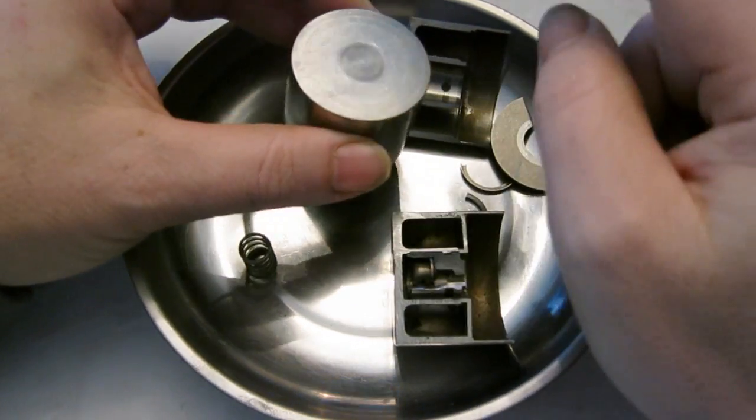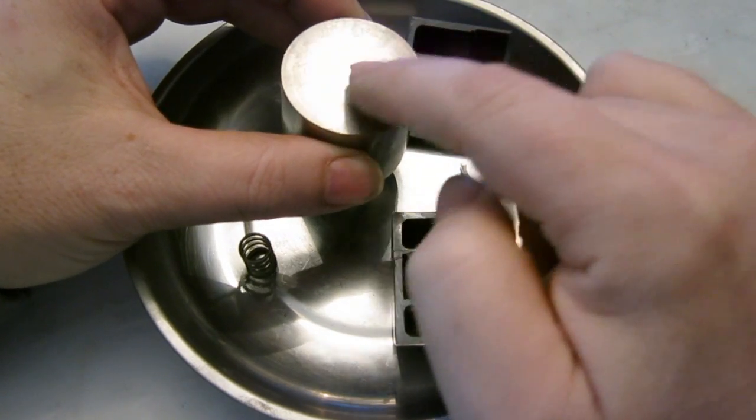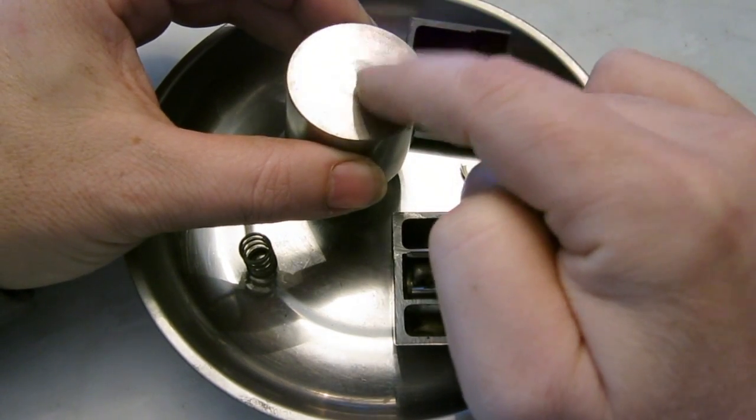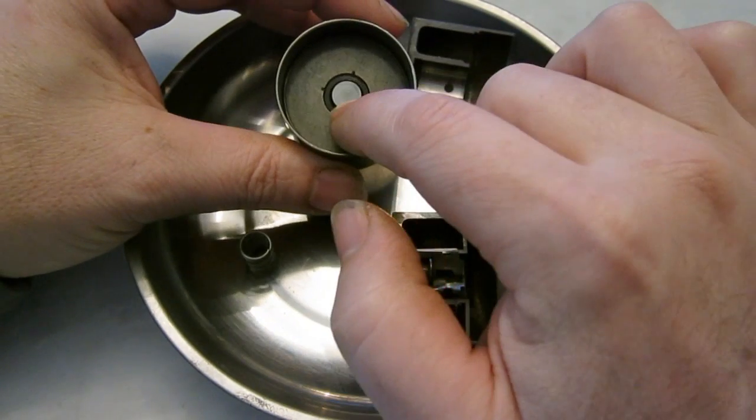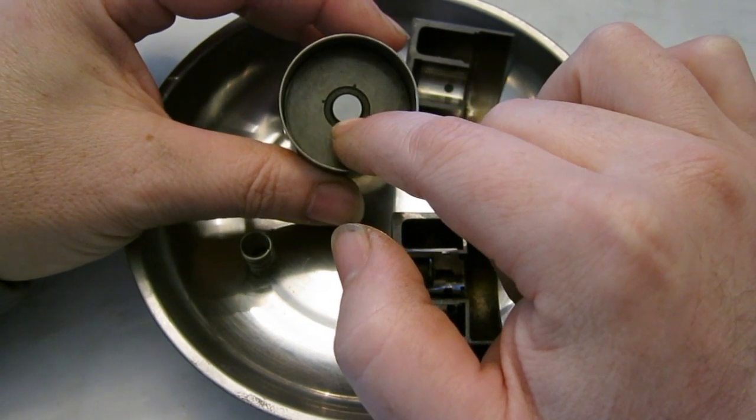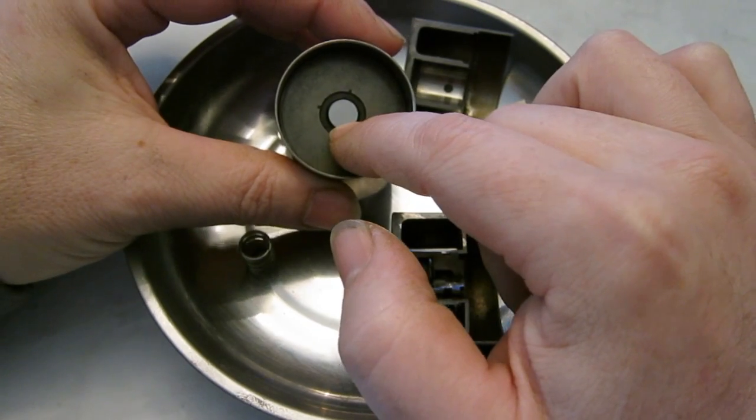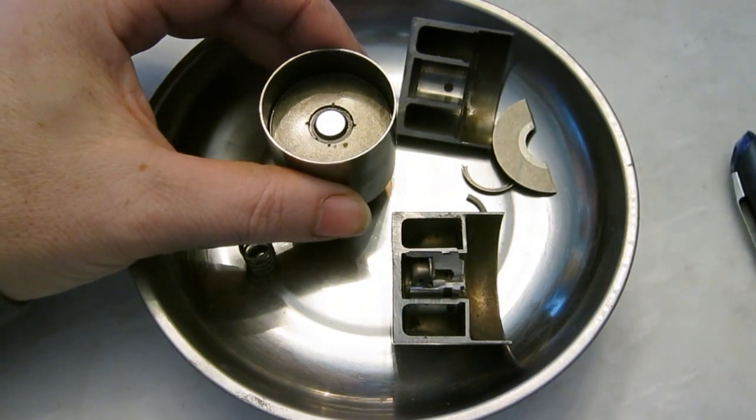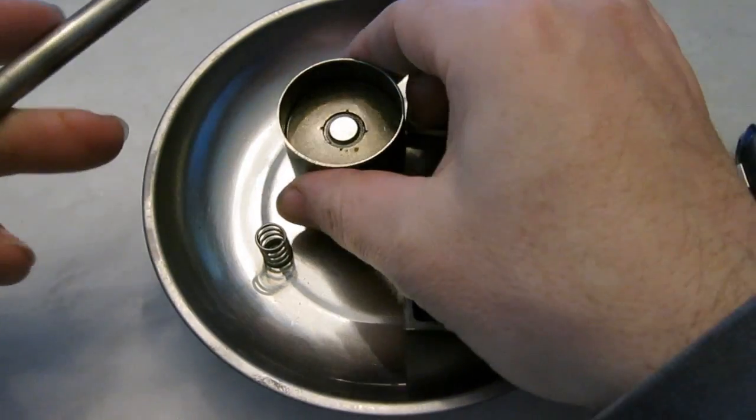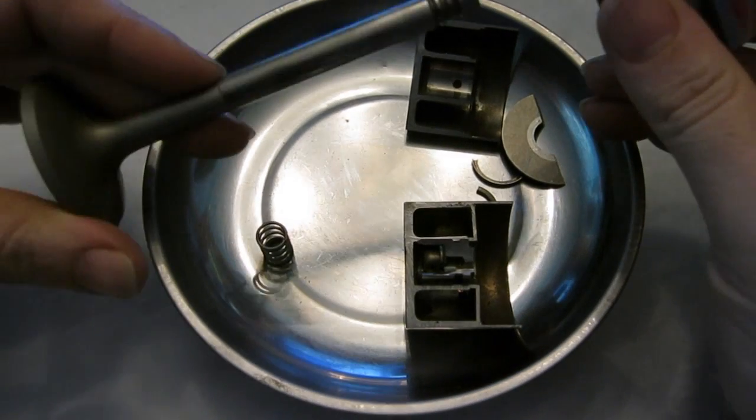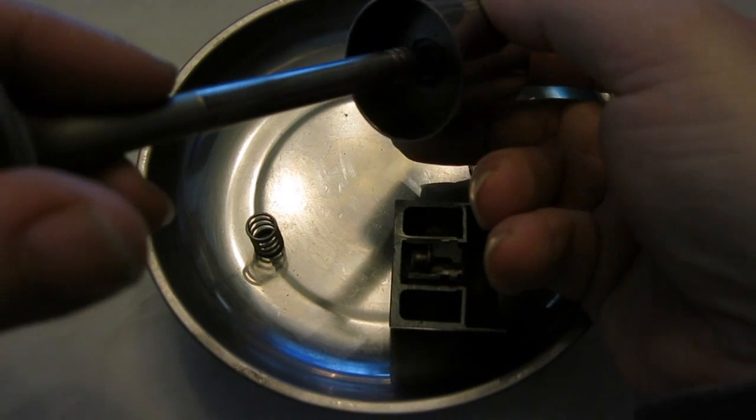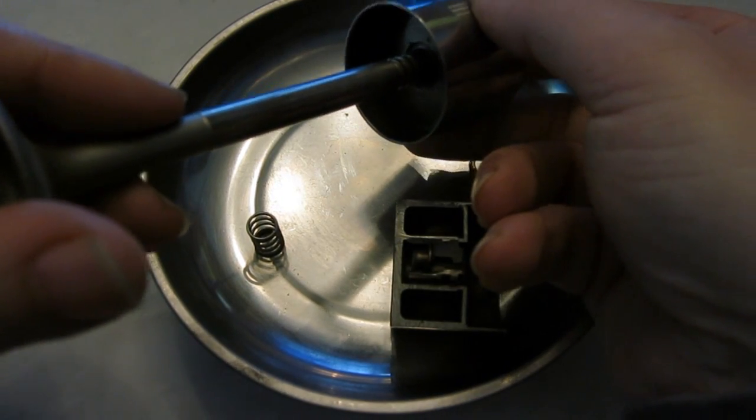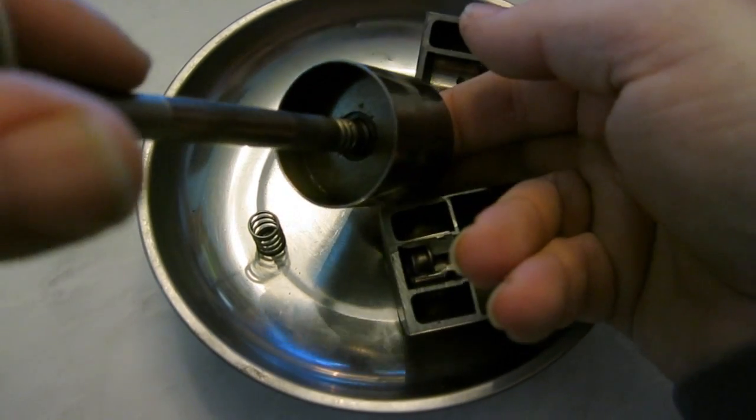So the point of the lifter is the camshaft lobe pushes on this top flat surface and moves the lifter up and down. And then this little button on the inside pushes against the top of the valve stem. And I've got a valve right over here. So here's a valve, right? It has to be an intake valve, so that little button pushes right against the top of the valve stem. Pushes it up and down.